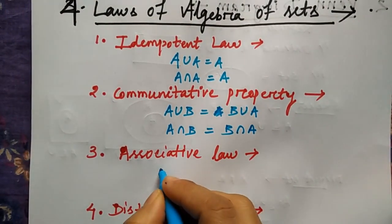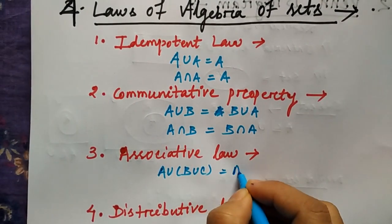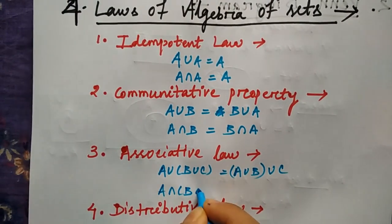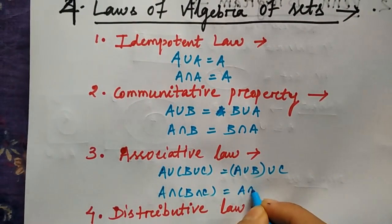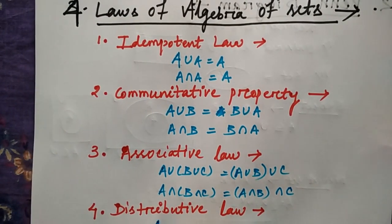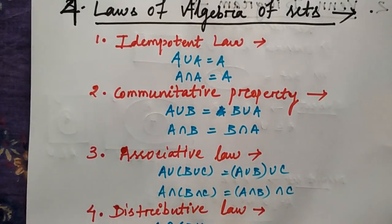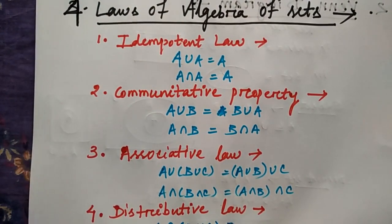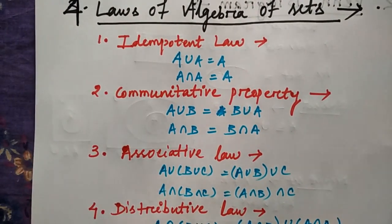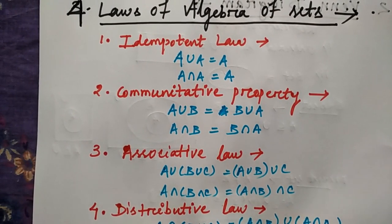The associative law states that A union (B union C) equals (A union B) union C, and A intersection (B intersection C) equals (A intersection B) intersection C. For the distributive law, A intersection (B union C) equals (A intersection B) union (A intersection C).